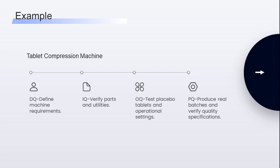Let's take an example with a tablet compression machine. During DQ, you define that you need a machine with 16 stations, 10,000 tablets per hour, and 10–30 kN compression force. During IQ, verify all parts installed per manual and utilities connected. During OQ, run placebo tablets and test speed and weight variation. During PQ, produce real batches and check hardness, disintegration, weight, and thickness — everything meets specs.